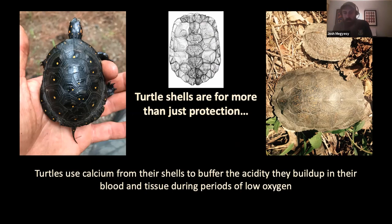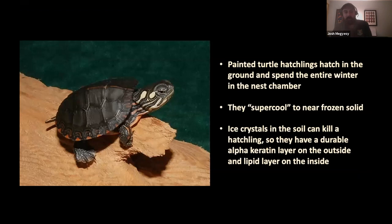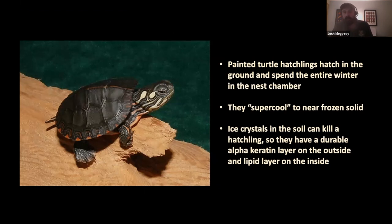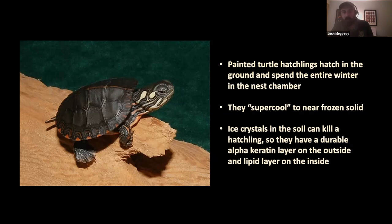Hatchling painted turtles have a remarkable adaptation. They hatch underground in the nest chamber and stay down in the soil about three inches deep all winter, not emerging until spring. They enter a supercool state, but the soil can freeze and shift around them. They have an alpha-keratin layer on the outside and a lipid layer on the inside of their skin that protects against ice crystals and movement in the freezing soil. Then in spring they pop out and race to water, escaping predators like crows and great blue herons.